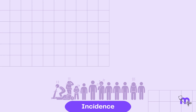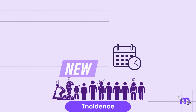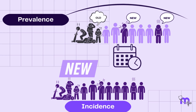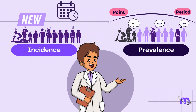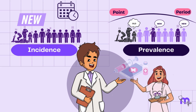To summarize, incidence is the number of new cases of a disease in a population over a specific period, while prevalence is the total number of cases of the disease in the population at a specific point or period. Understanding the difference between the two is important for public health officials to accurately track and monitor the spread of diseases and to develop effective prevention and treatment strategies.